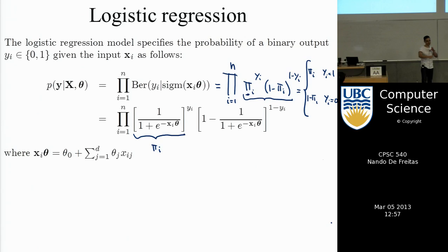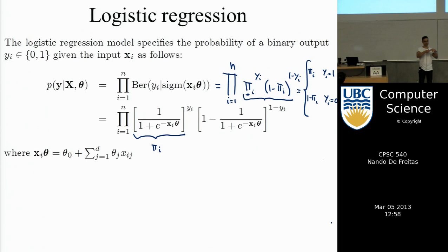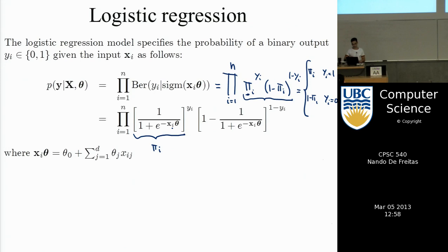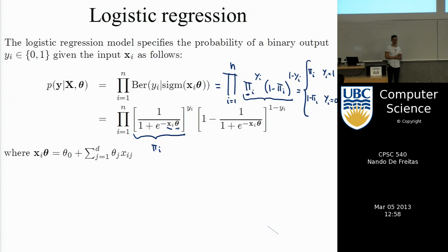We will use basic probability distributions like Bernoulli and Gaussian, but parameterize them. For example, the mean of a Gaussian will be a whole function with many parameters — that's where the power comes in. Pi_i is the success probability of the neuron, taking into account the input and synaptic weights. Pi_i is guaranteed to be between 0 and 1, so by construction we have a valid probabilistic model.